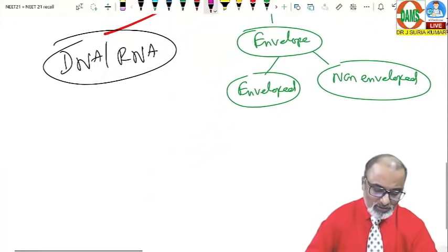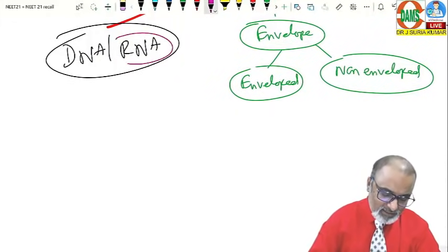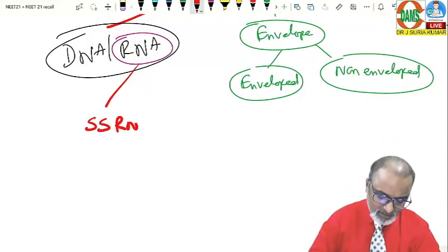And everybody knows, measles is an RNA virus. It is having single-stranded RNA with what sense?